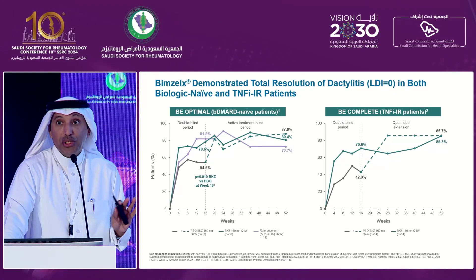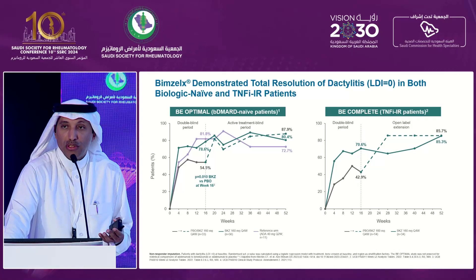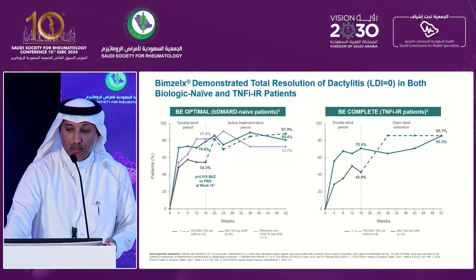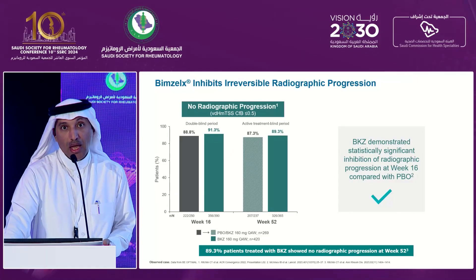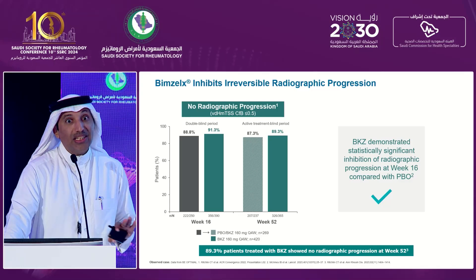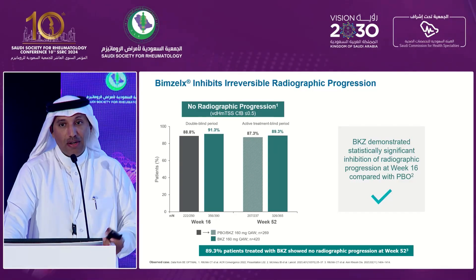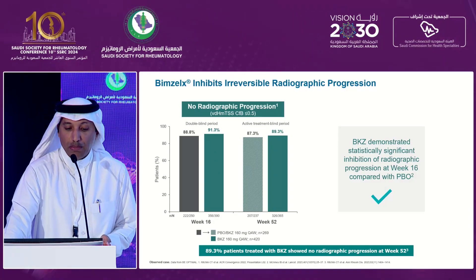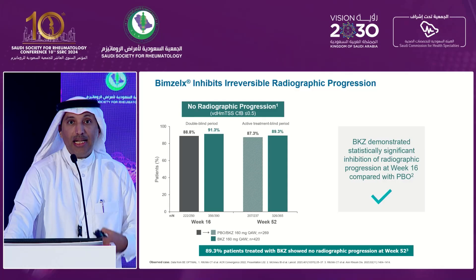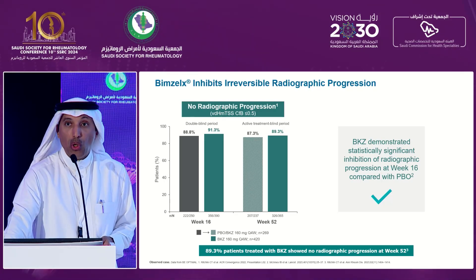For dactylitis: 82% complete resolution at week 16, and almost 90% complete resolution at the end of one year. Even in patients who failed anti-TNF, the results for dactylitis are almost the same. To call a medication a DMARD, it has to show inhibition of radiological progression. There was no radiological progression up to week 16 when patients were shifted from placebo to the active arm, and at the end of one year there was no radiological progression in almost 90% of patients with PsA.